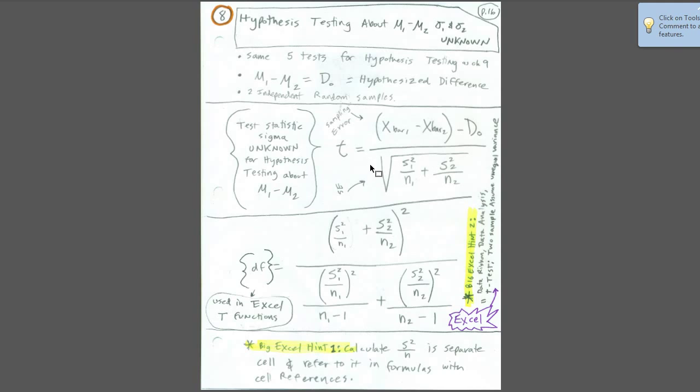That'll be x bar 1 minus x bar 2 minus our hypothesized difference of 0. That'll be the numerator. And we divide it by the standard error, or the standard deviation for the sampling distribution of x bar 1 minus x bar 2 for the t distribution. We take the square root of variance from the first divided by sample size of the first plus variance of the second divided by sample size of the second.